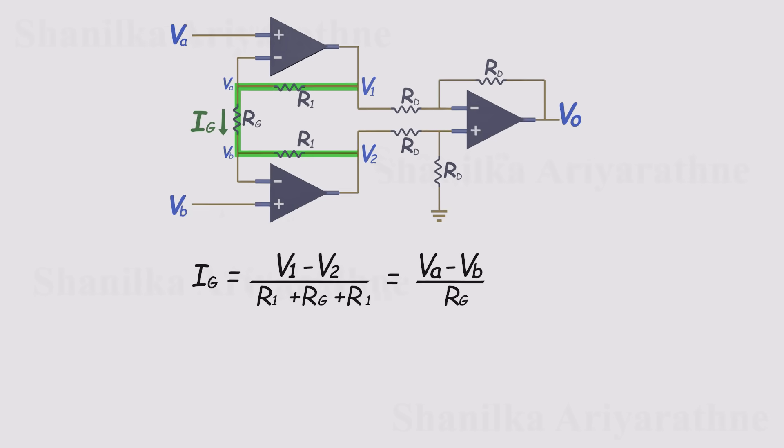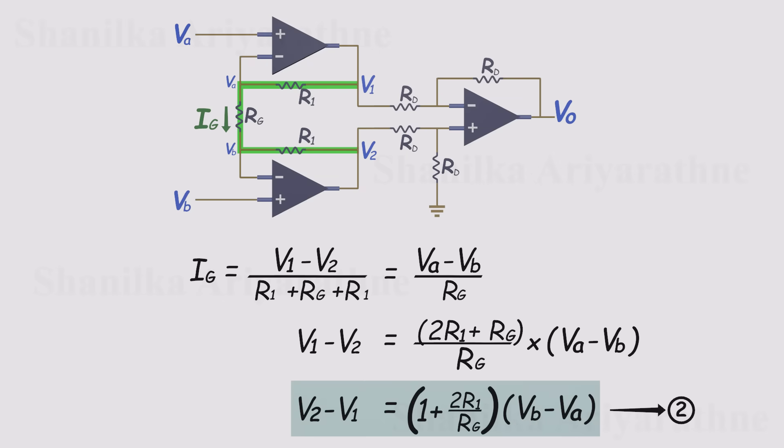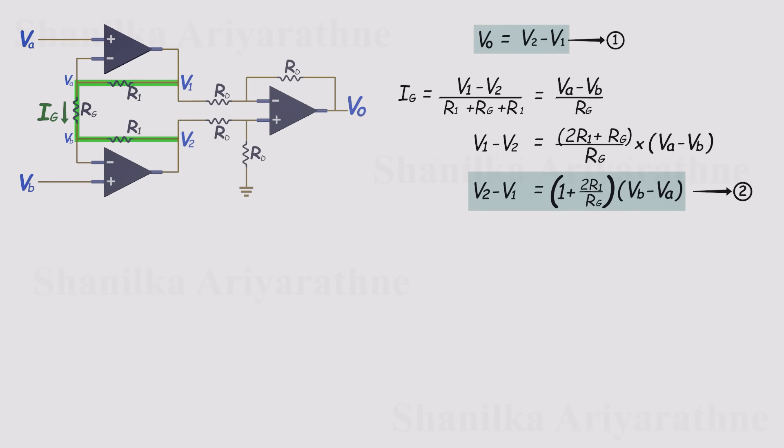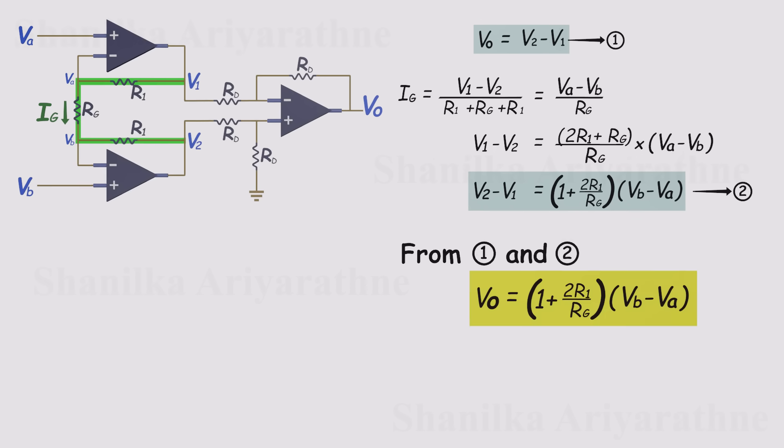If we combine these two expressions and solve, we find a direct relationship between V1 minus V2 and VA minus VB. That gives us our second equation. Now, when we plug this back into the overall amplifier equation, the output Vout comes out as the gain multiplied by the input difference.